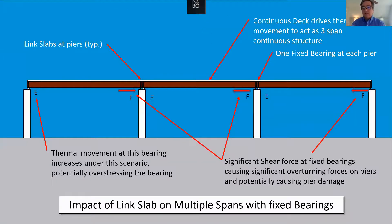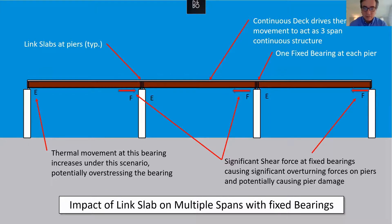Looking at an entire structure during a superstructure replacement, you must review all bearing lines. If you have the conventional fixed-expansion, fixed-expansion setup common on older bridges, you may need to change out the fixed bearings at some piers, because the thermal movement of a jointless bridge will create significant forces in the substructures. The structure will essentially behave as a continuous structure for thermal loads, and you must account for that in your design. Simply replacing existing joints with link slabs requires a careful review of bearings across the whole structure.